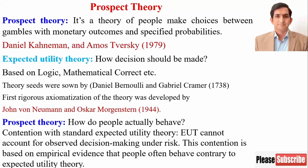In standard finance, we usually apply expected utility theory. It tells us about how decisions should be made, meaning that decisions should be based on logic and decisions should be correct mathematically. This theory was developed by John and Oscar in 1944.